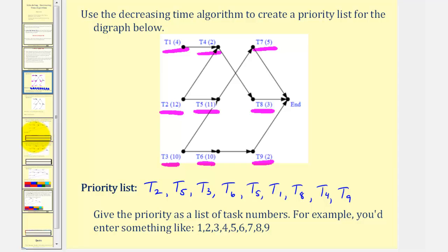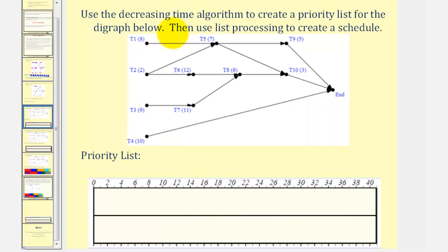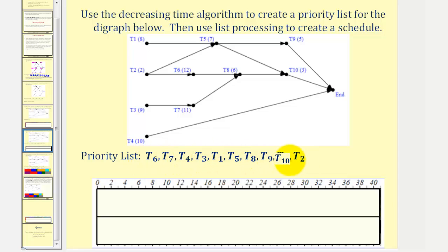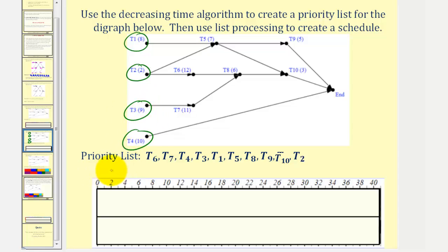Now let's take a look at a second example. Here we want to use the Decreasing Time Algorithm to create a priority list from the digraph below, and then use the List Processing Algorithm to create a schedule. If we rank these tasks based upon the completion time with the highest completion times first, it gives us this priority list — listed from highest to lowest completion time. To apply the List Processing Algorithm, we circle the ready tasks, which are tasks that don't have any prerequisite tasks: task one, two, three, and four. We'll also circle them on the priority list.